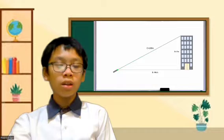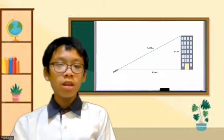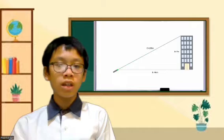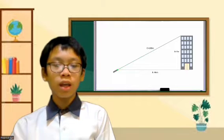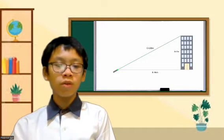In this diagram, a is shown as the height of the building, b is the distance of you to the base of the building, and c is the distance of you to the top of the building.